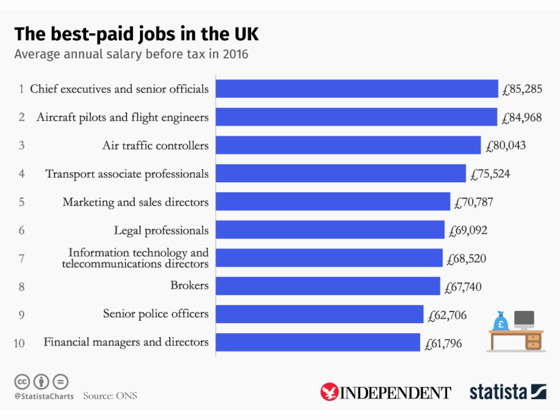MRPL may help to explain significant and persistent differences in wages and earnings across occupations. This chart here shows the latest data on the best paid jobs in the UK — CEOs, senior officials, flight engineers, air traffic controllers — right at the top in terms of average annual salary before tax in 2016. So to what extent are those high salaries, those high earnings, a reflection of the marginal revenue product of the people employed by those businesses?